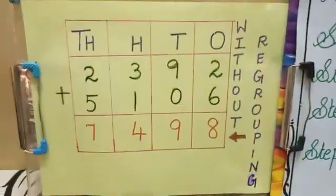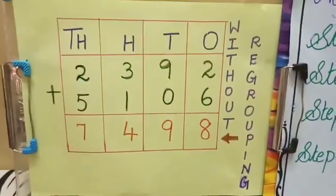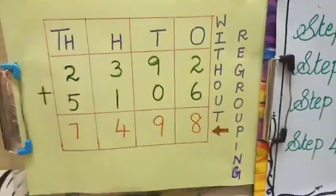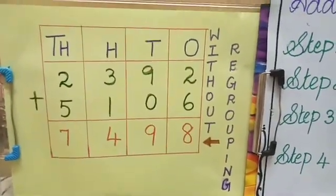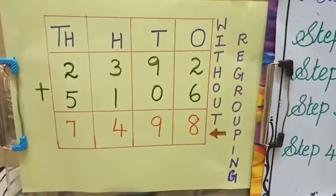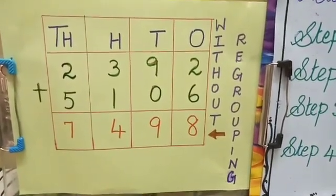Here we are going to add 2,392 with 5,106. First, we have to begin by adding the ones. By adding the digits in the ones place, we have 2 plus 6 gives you 8.